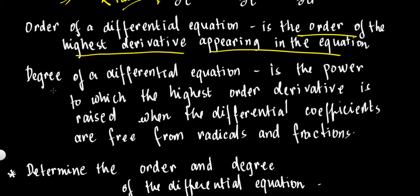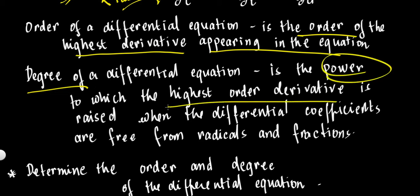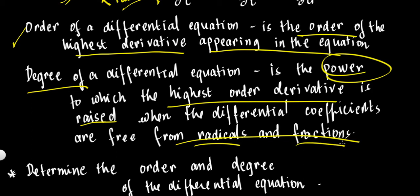For the degree of the differential equation, we need to be careful. The degree is the power or exponent to which the highest order derivative is raised. Once you've identified the highest derivative (the order), look at what exponent or power it is raised to — that is the degree. Importantly, the degree is defined only when the differential coefficients are free from radicals and fractions — they must be in polynomial form.